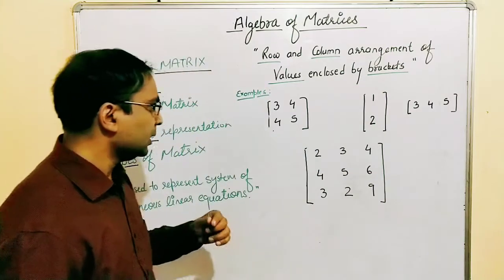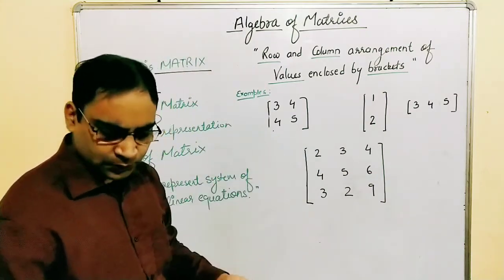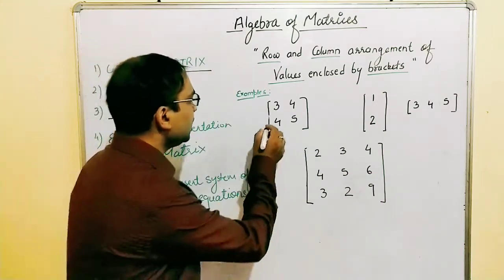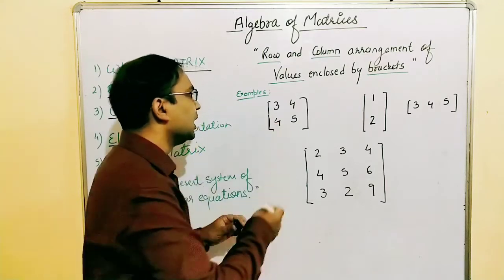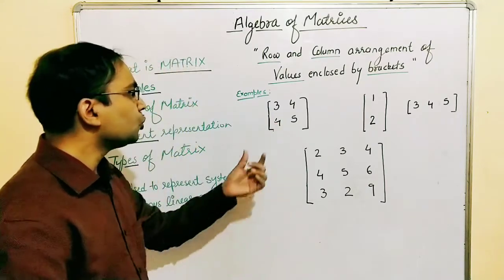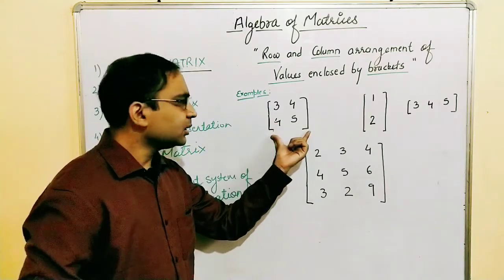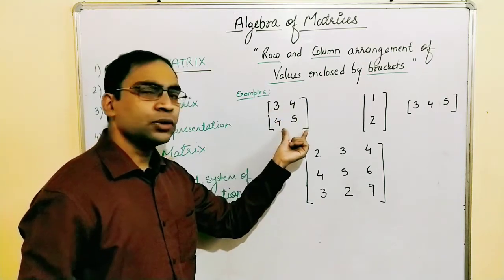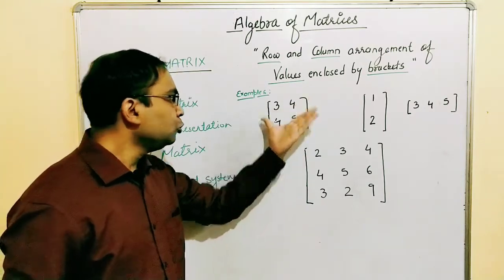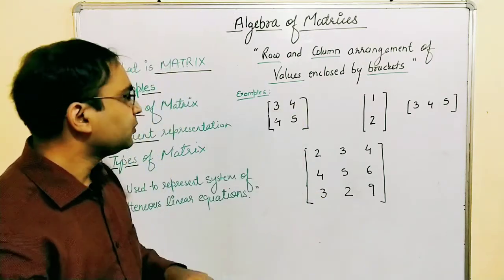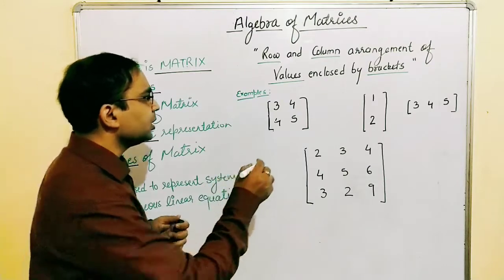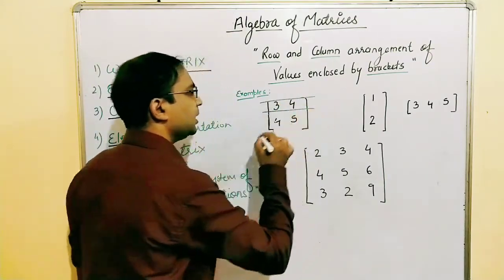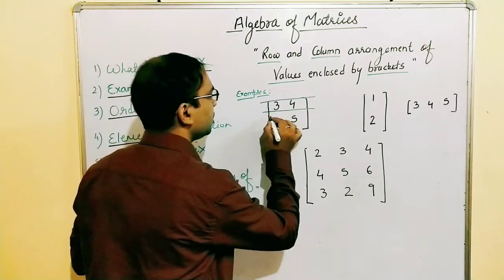For example, let's say we have a few values — 3, 4, 4, and 5 — enclosed within brackets. We have two rows here: row number one with values 3 and 4, and row number two with values 4 and 5.